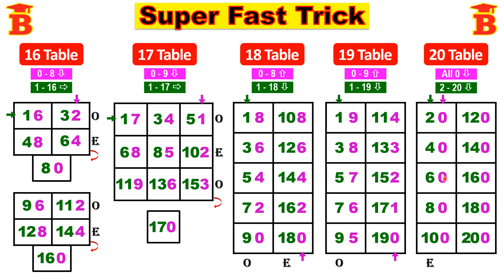Therefore the 20th table is: 20, 40, 60, 80, 100, 120, 140, 160, 180, and finally 200. In this way we can write the tables from 11 to 20 very fast using this trick. Thanks for watching.